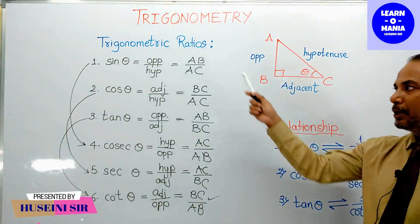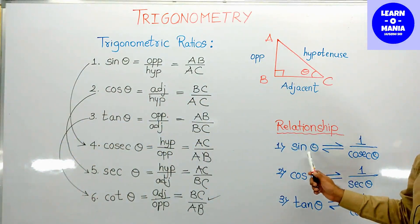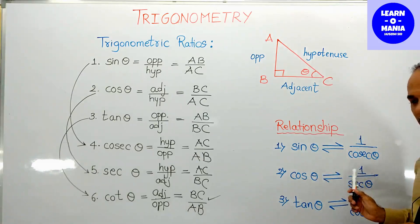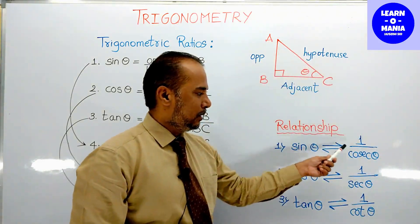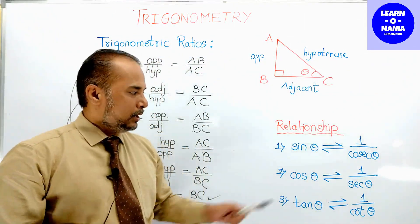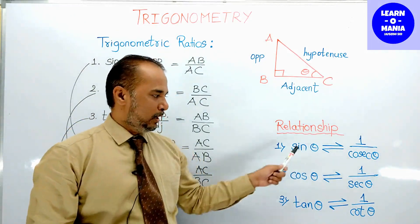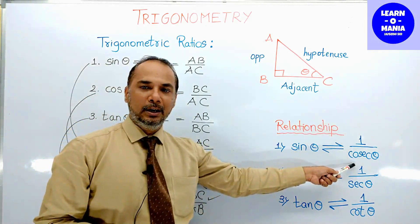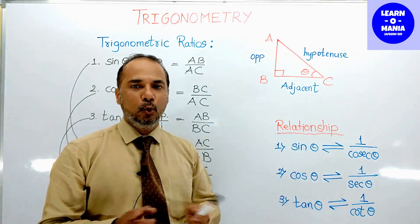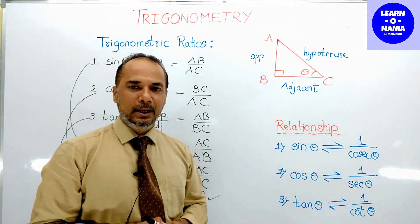Now the relationship between trigonometric ratios: sin theta has a relation with cosec theta — sin theta equals one upon cosec theta. This double-sided arrow means both ways are valid: sin theta is the inverse of cosec theta, and cosec theta is the inverse of sin theta. They are each other's inverse.